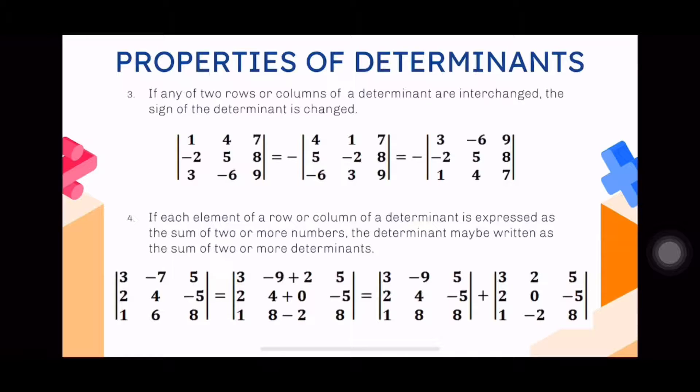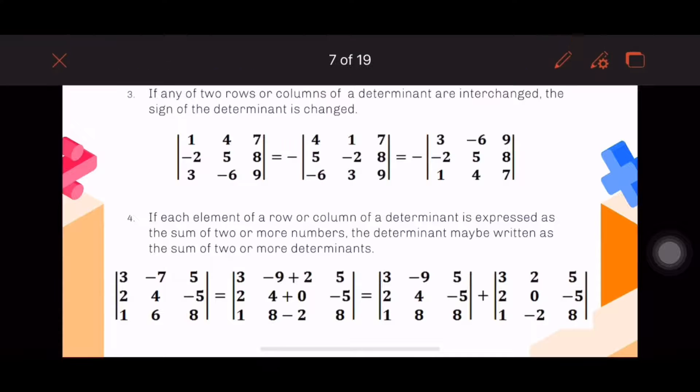In our first matrix here, the first column is one, negative two, three; second column is four, five, negative six; third column is seven, eight, nine. Looking at the second matrix, the first and second columns are swapped. If you interchange the columns, make sure to indicate a negative sign, which means it's just equal to the original determinant. For the third matrix, what was swapped? The first and third rows were swapped, but still the presence of a negative sign indicates it's equal to the first determinant.